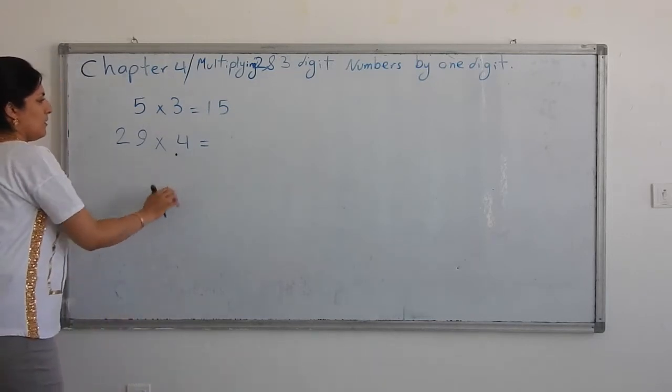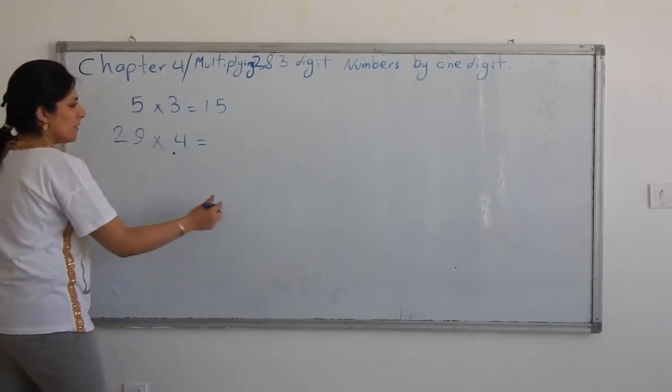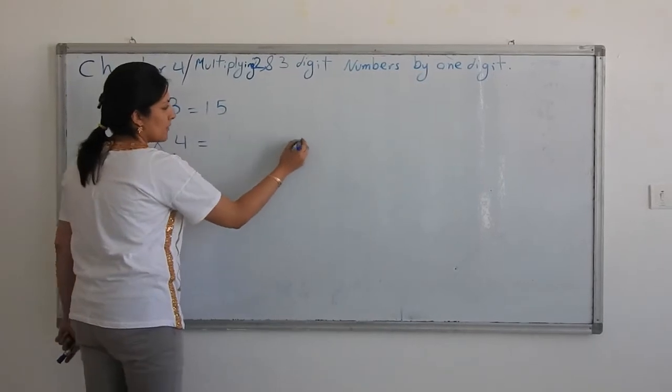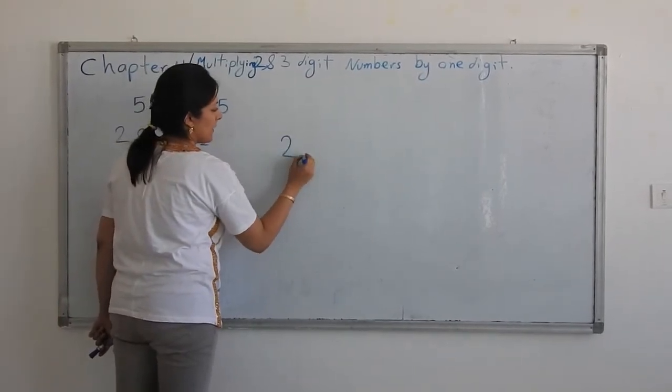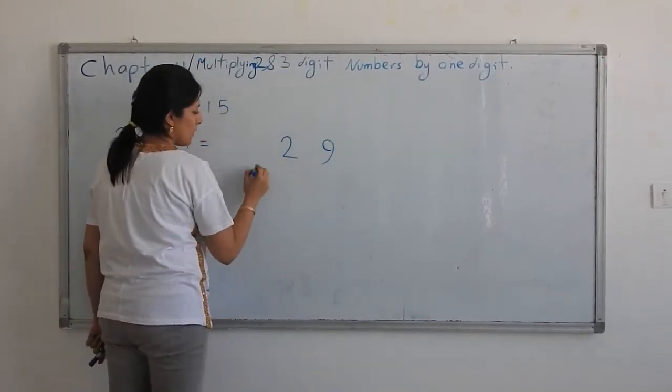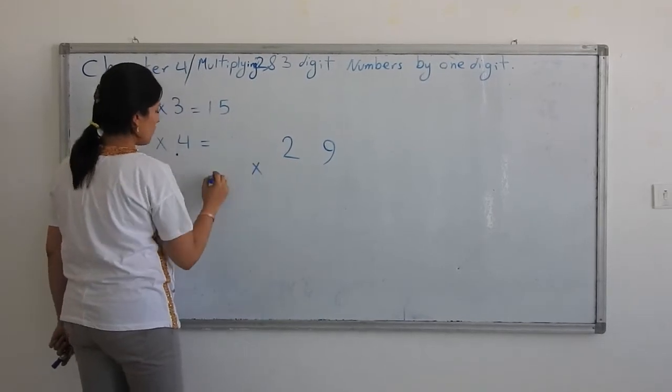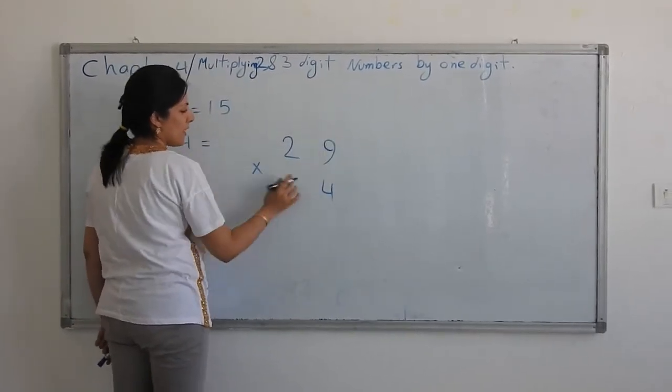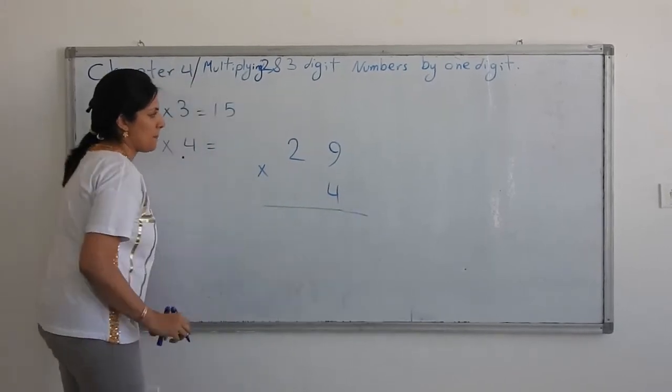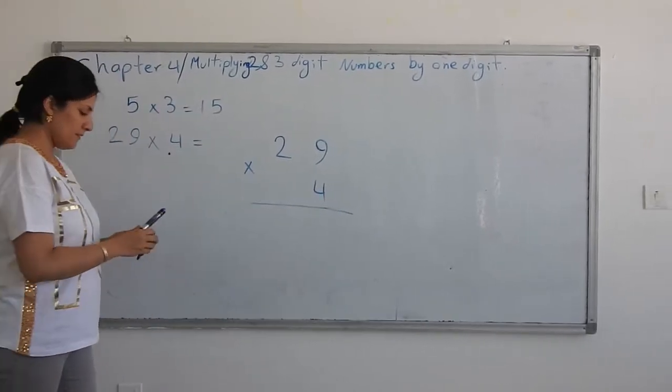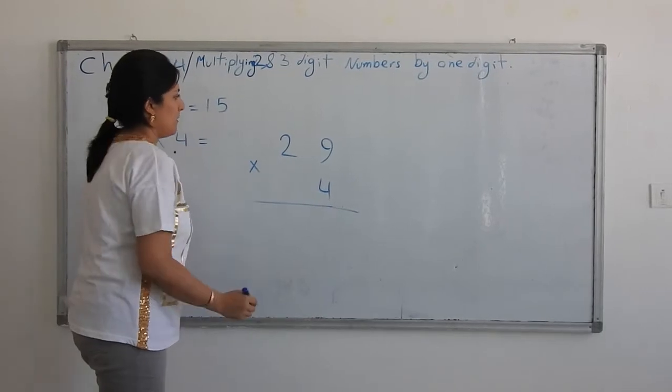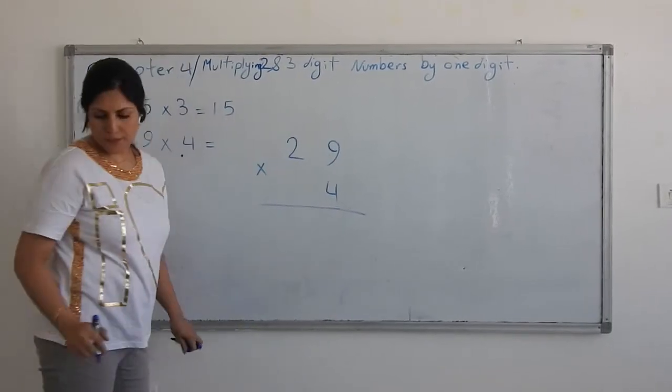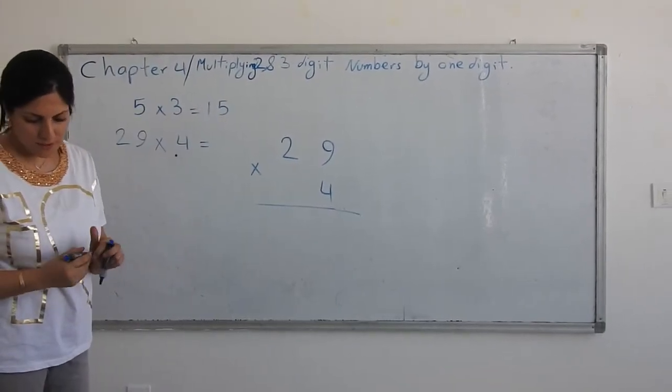So, in case of two digit number, just you can write the number under each other in a column like that. 29 times 4. And then, multiplication process is like that.